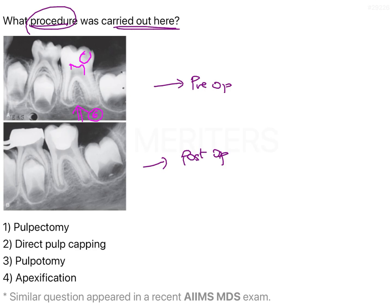We can also see that it's an immature tooth because the root development is still ongoing — the root apical closure has not yet been achieved. In the post-op radiograph, we see that there is a filling material extending till the coronal portion of the tooth, and the radicular pulp chambers are all intact. The root length has actually increased from the pre-op to the post-op, though root enclosure is still not achieved.